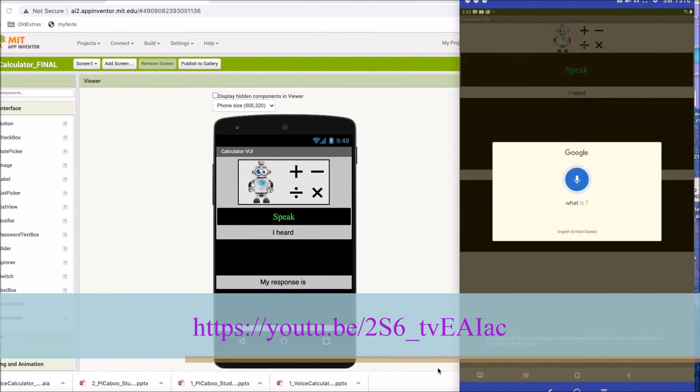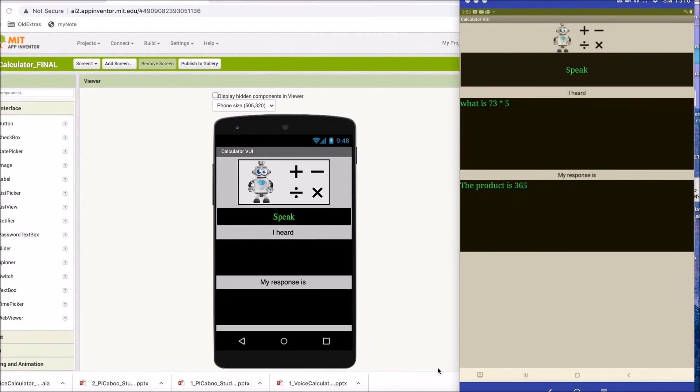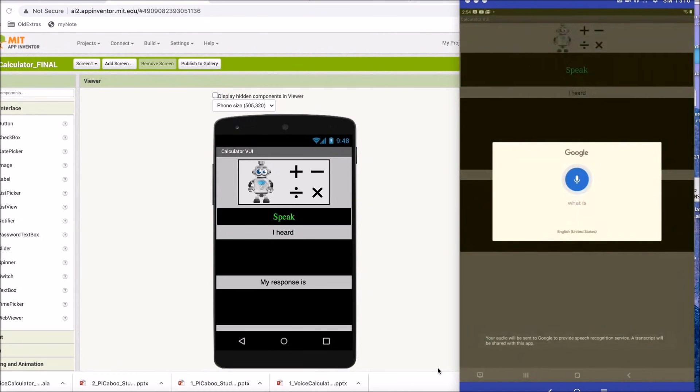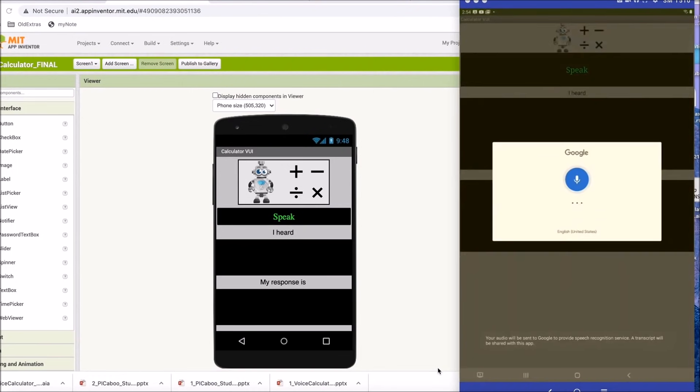What is 73 times 5? The product is 365. What is 14 divided by 8? The quotient is 1.75. How are you today?